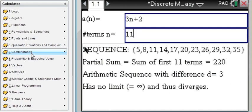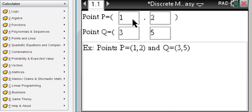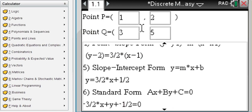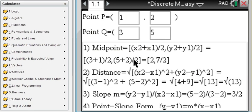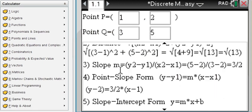oh right here polynomial points and lines say you're given two points P and Q and here you can find the midpoint the distance the slope no problem at all